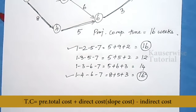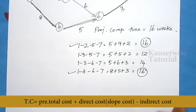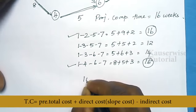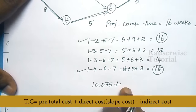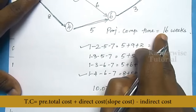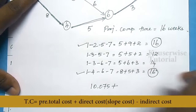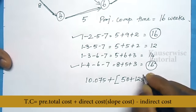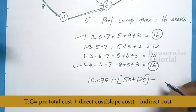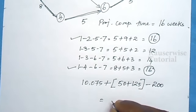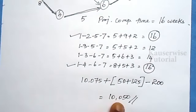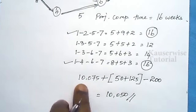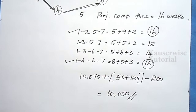Total cost for the third iteration: take the previous cost of 10,075, add direct expenses 50+125 = 175, and subtract indirect cost of 200. Total = 10,075 + 175 − 200 = 10,050 rupees. This is less than the previous iteration, so we continue to find the least total cost.